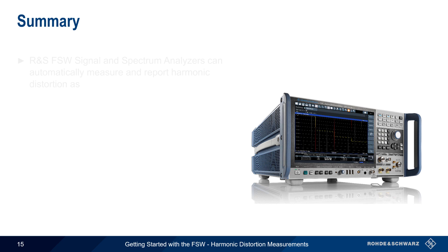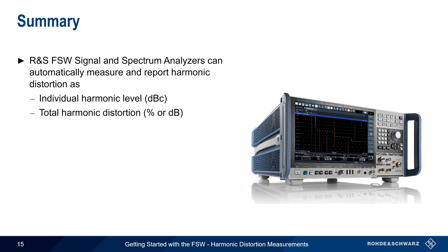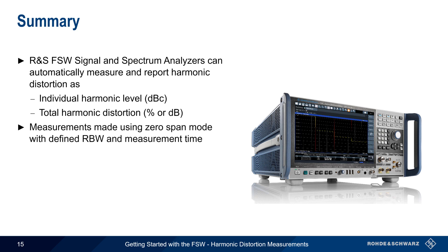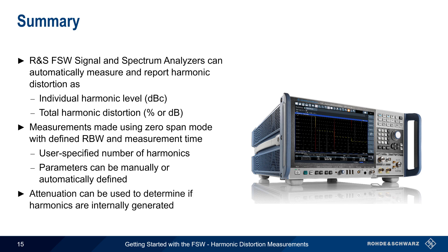In summary, Rohde & Schwarz FSW series signal and spectrum analyzers can automatically measure and report harmonic distortion, both for individual harmonics as well as total harmonic distortion. Measurements are made in zero-span mode using a configured resolution bandwidth and measurement time. In most cases, the user only needs to specify the number of harmonics of interest, although additional parameters can be manually or automatically defined. Note that attenuation can be used to help determine if the measured harmonics are being generated within the analyzer itself. Thanks for watching.